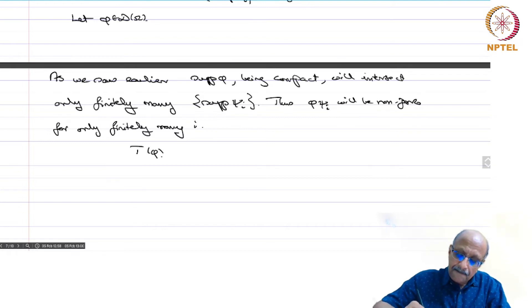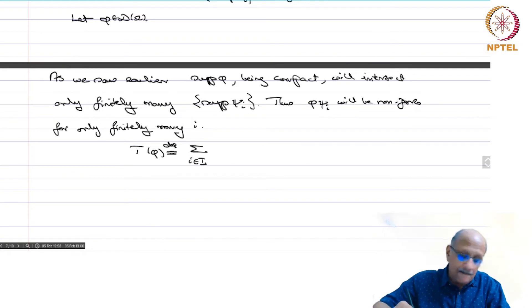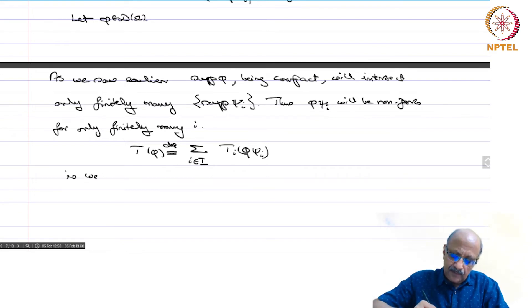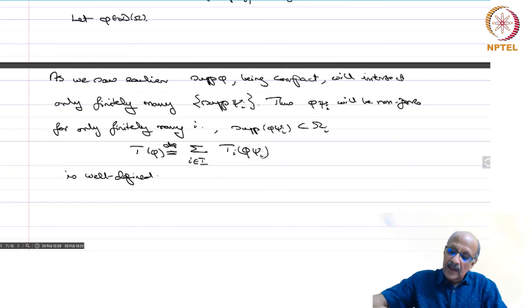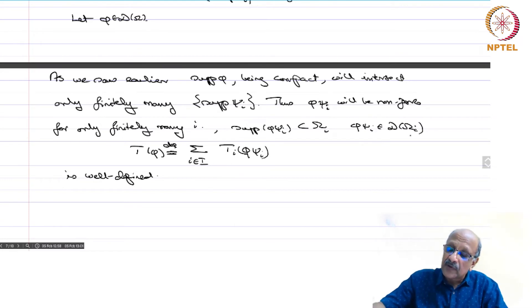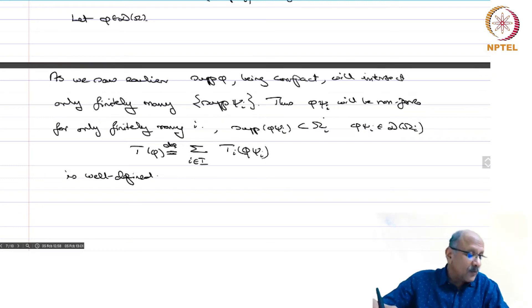So we define: T(phi) = summation over i in I of t_i(phi·psi_i). This is well-defined because the support of phi·psi_i is contained in the support of psi_i, which is contained in omega_i. So phi·psi_i belongs to D(omega_i), making t_i(phi·psi_i) meaningful for every i, and non-zero for only finitely many i.